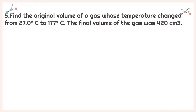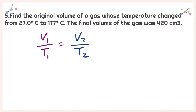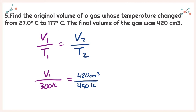For number five, find the original volume of a gas whose temperature changed from 27 degrees Celsius to 177 degrees Celsius, with a final volume of 420 centimeters cubed. I'm going to write down my equation: V1 over T1 is equal to V2 over T2. Now, before I plug in all my values, my temperatures were given in degrees Celsius — I'm going to change them into Kelvin because Kelvin is our standard temperature and all my calculations need to be in Kelvin. After doing that and plugging everything in, I see that I need to solve for V1. 27 degrees Celsius became 300 degrees Kelvin and 177 degrees Celsius became 450 degrees Kelvin.